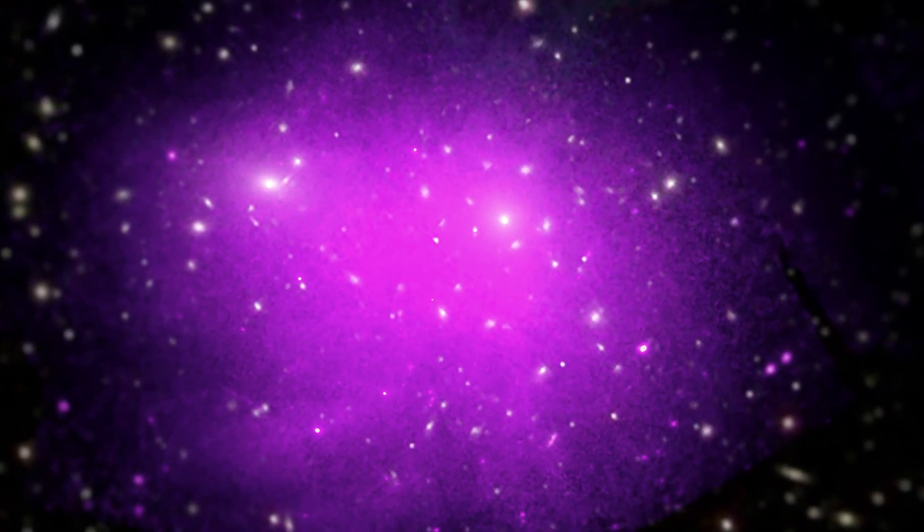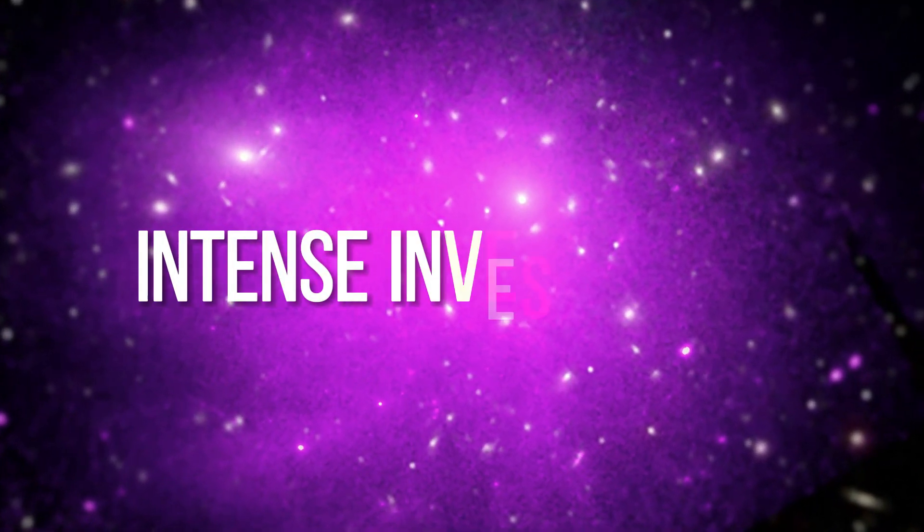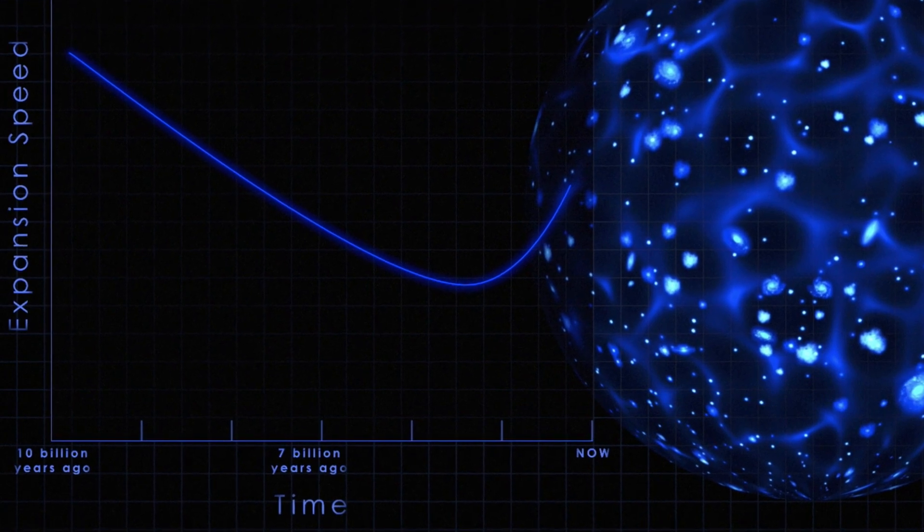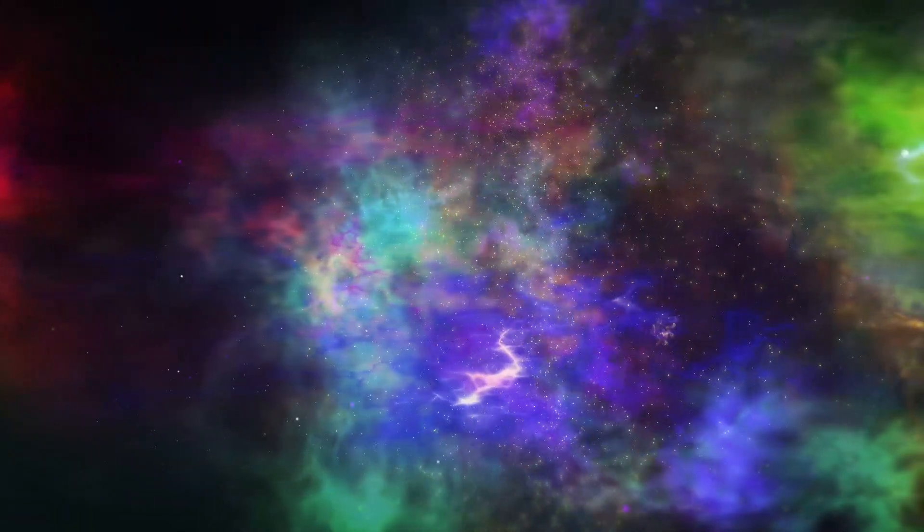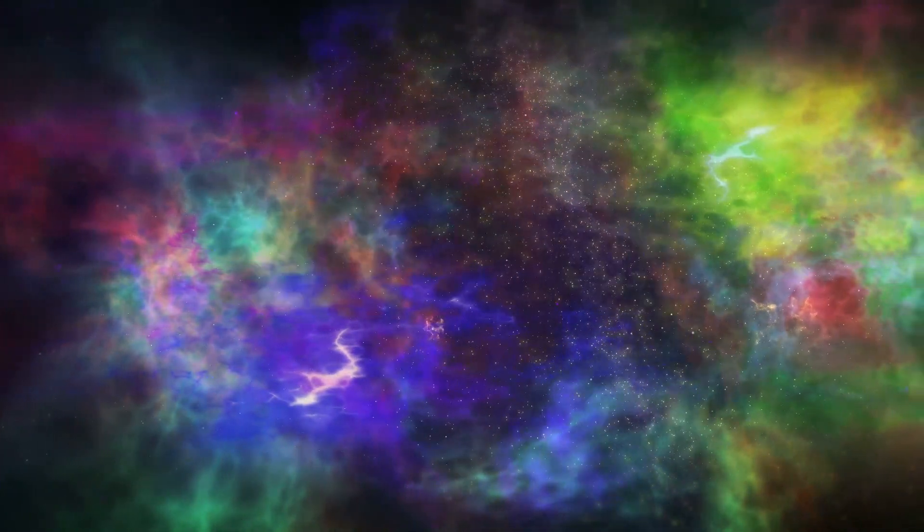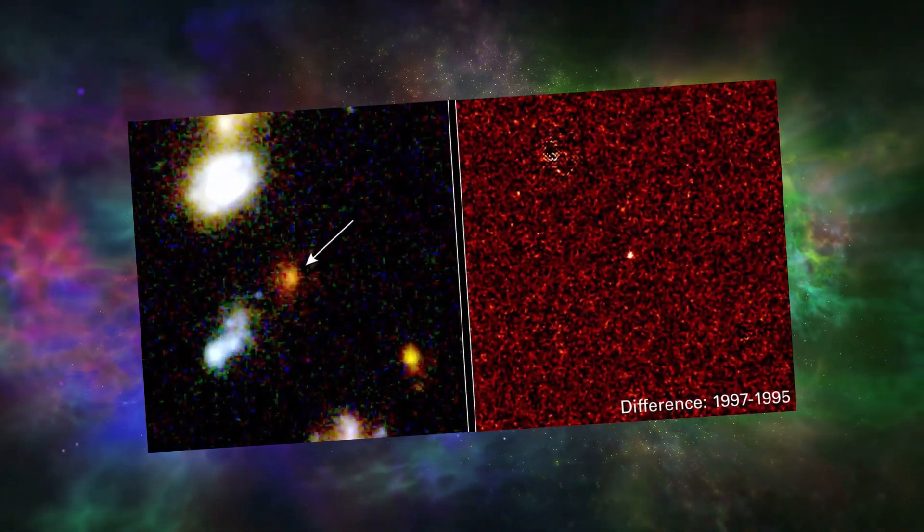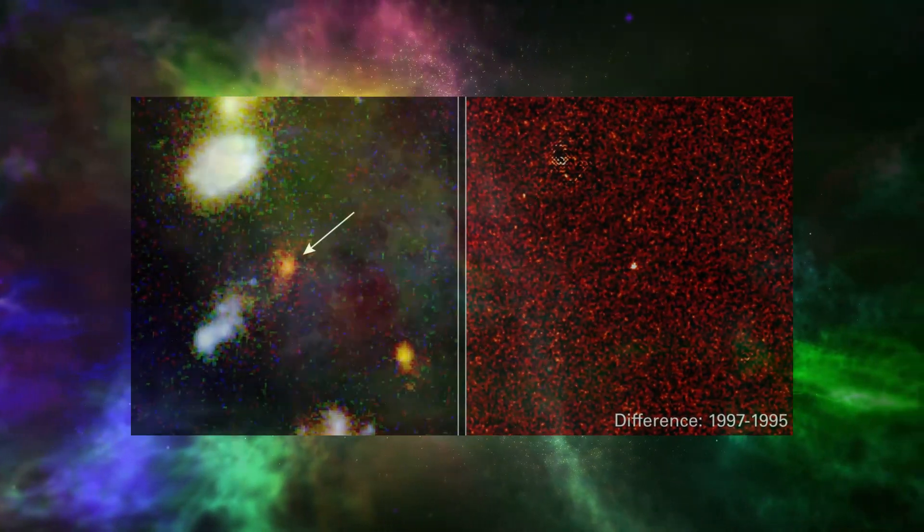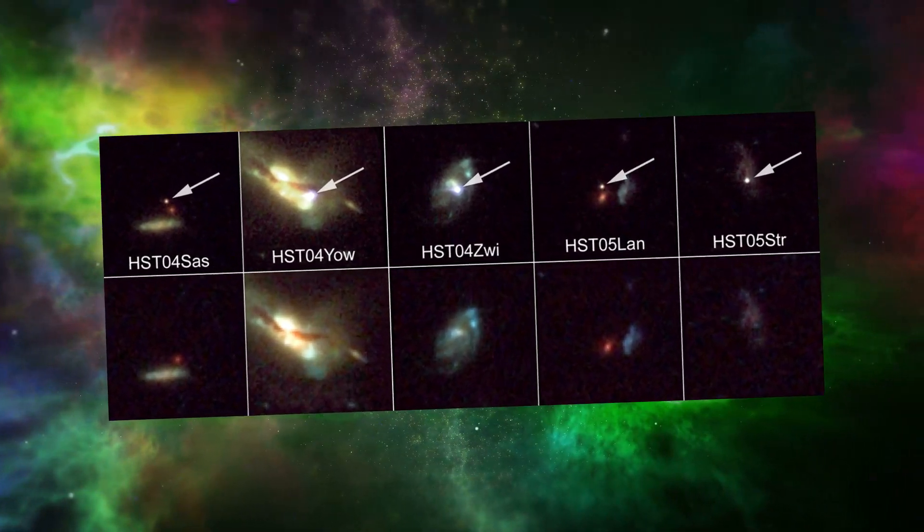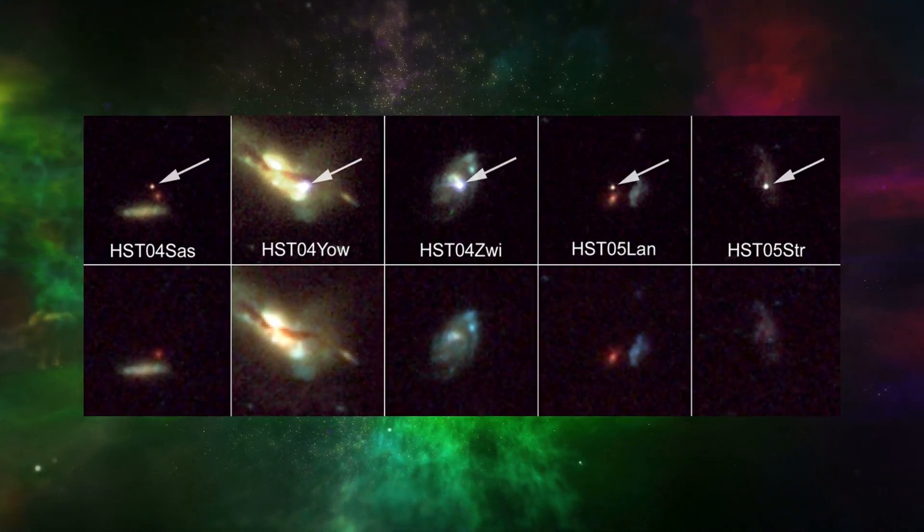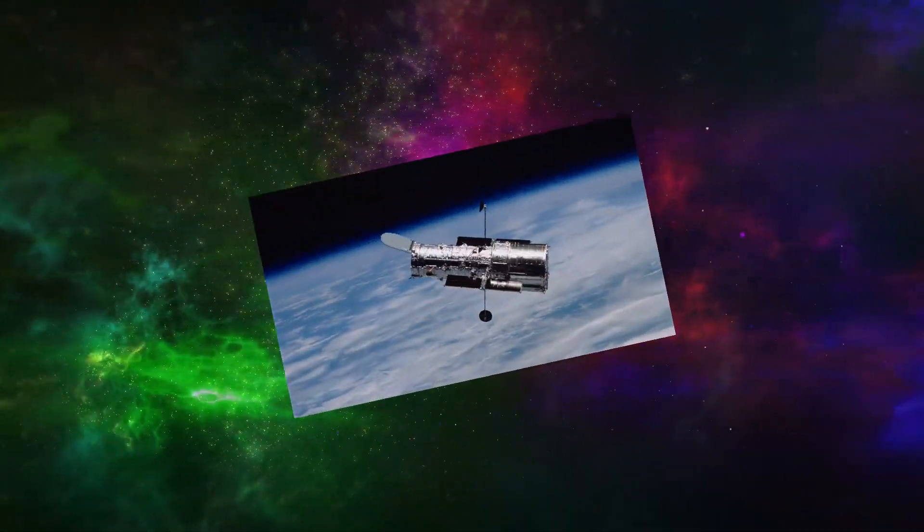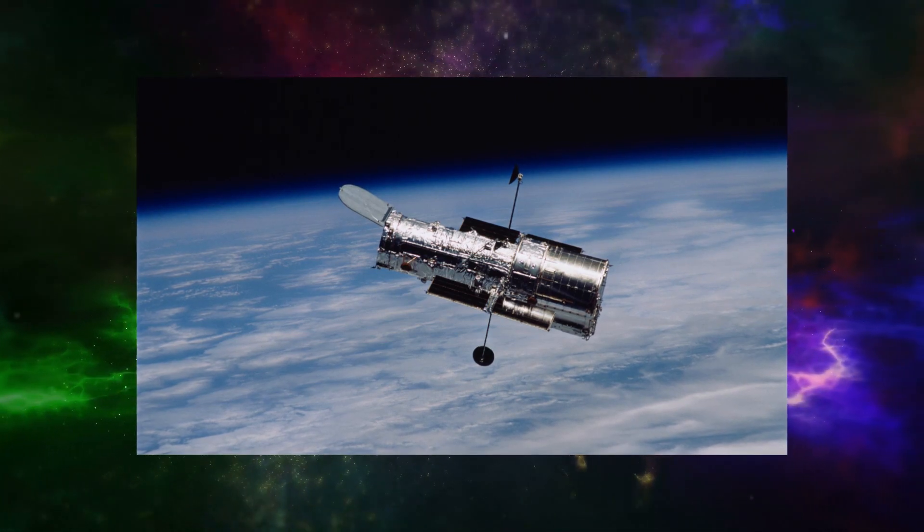Although its exact nature and mechanisms are still the subject of intense investigation, scientific evidence and expert reports support the existence and importance of dark energy. One of the first pieces of evidence for the existence of dark energy came from observations of distant supernovas. Astronomers noticed that these stellar explosions would have a fainter brightness than expected if we considered only the deceleration caused by gravity. Instead, the supernovas showed a dimmer brightness, indicating an accelerated expansion of the universe. This discovery was reinforced by various space missions, such as the Hubble Space Telescope, which confirmed and expanded upon these observations.